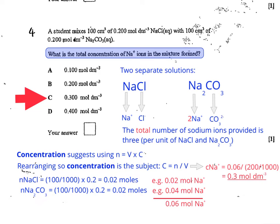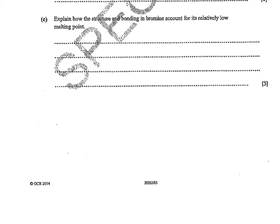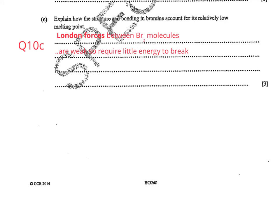So let's go on to question 10C, which asks us to consider the structure and bonding in bromine and how this accounts for its relatively low melting point. The first thing to do is mention the intermolecular forces present in bromine and state that they are between bromine molecules. The only other thing you need to say is that those London forces are weak, so they require little energy to break. There's actually very little to say here, but you have to be quite specific in the way you say it.